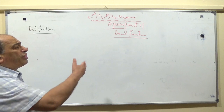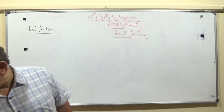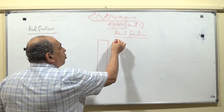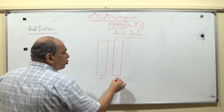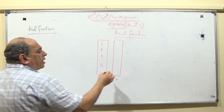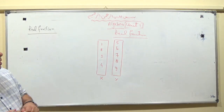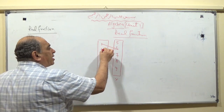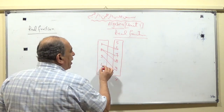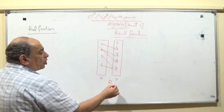To understand the meaning of a real function, we revise the relation between two sets from the prep stage. For example, in relation R1 from set X to set Y: X has elements 1, 2, 3, 4 and Y has elements 5, 6, 7, 8, 9. Here, 1 maps to 6, 2 maps to 7, 2 also maps to 8, 3 maps to 9, and 4 maps to 9. We notice element 2 has two images: 7 and 8. So relation R1 is not a function.